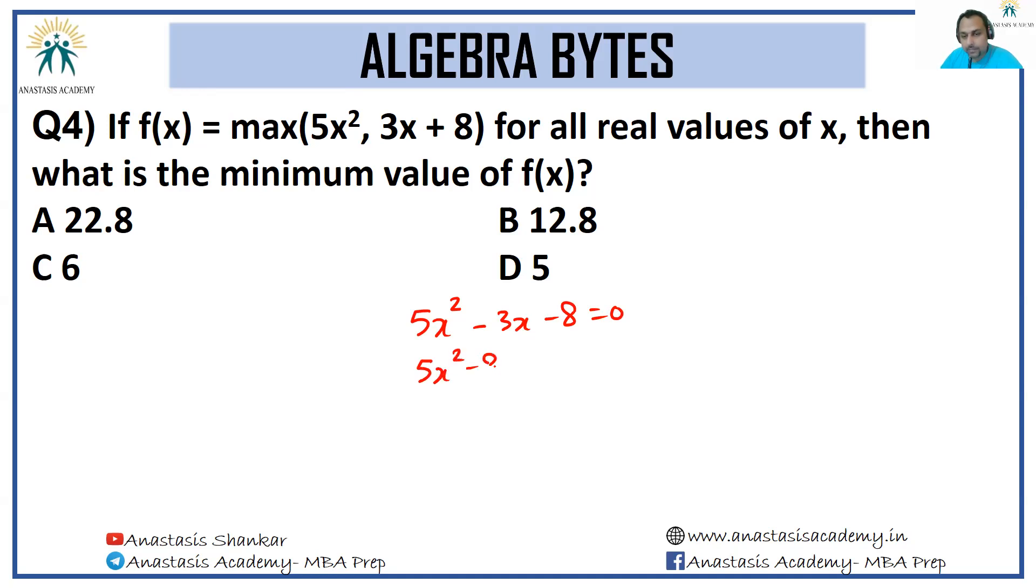So 5x² - 8x + 5x - 8 = 0. So then we now have x taken out common: x(5x - 8) + (5x - 8) = 0. So we either have x = -1 or x = 8/5.